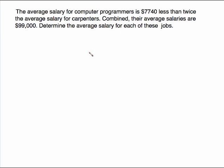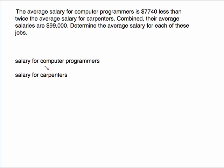The average salary for computer programmers is $7,740 less than twice the average salary for carpenters. Combined, their average salaries are $99,000. Determine the average salary for each job. We're looking at computer programmers and carpenters, so those are the two phrases I'll use, and then I'm going to assign my variables.